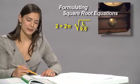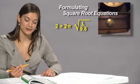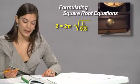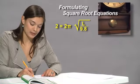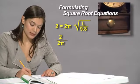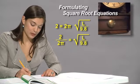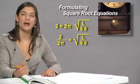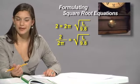We need to get L by itself on one side of the equation, and the first thing we need to do is divide by 2 pi. Now we get 2 divided by 2 pi equals the square root of L over 9.8. But how do we get rid of that radical sign? It's kind of in the way.